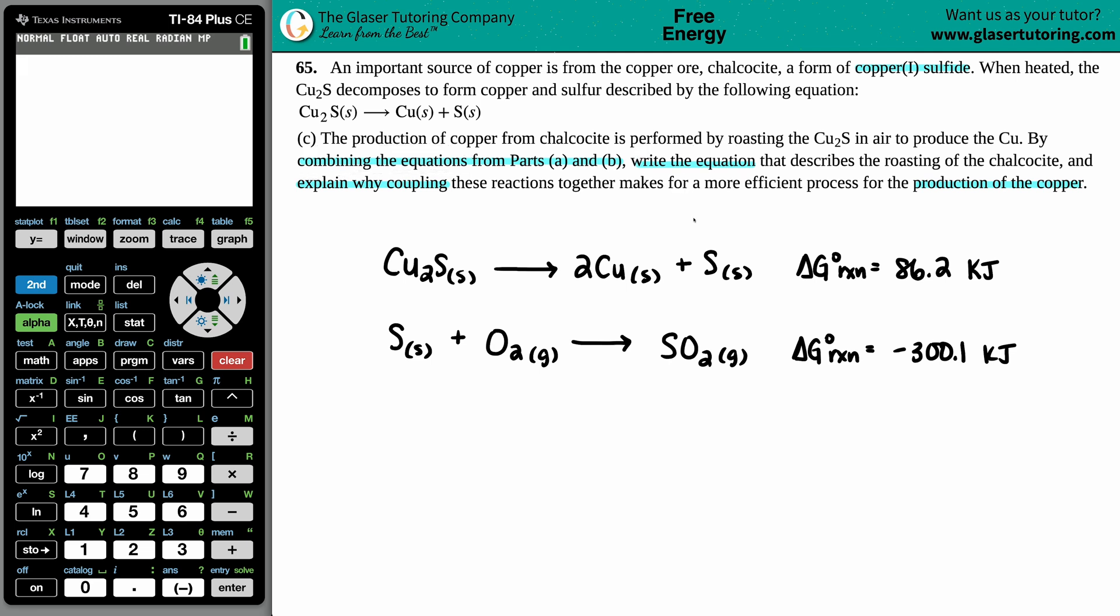Okay, so basically we have to combine the equations from part A and part B and write a general equation. Let's first do that. I already went to part A and I wrote down the balanced equation for part A, and this one is the balanced equation for part B with their respective delta G's that we found. So all we have to do here is just add them together.